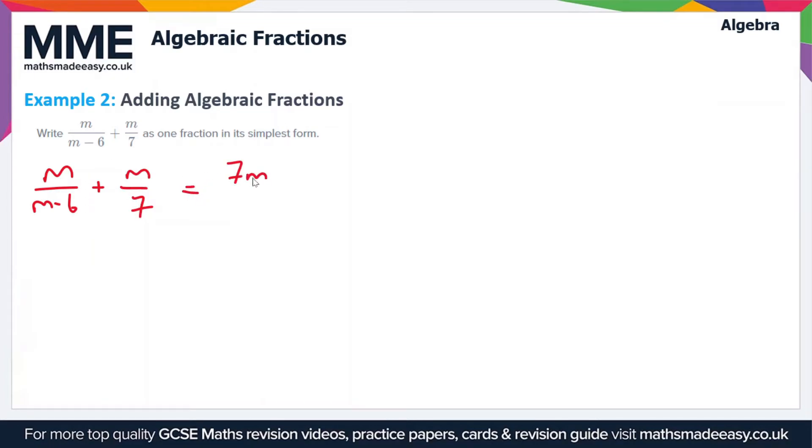This is going to give us 7m over 7(m-6) - that's our first fraction - and then we add m(m-6) over 7(m-6). We got that by multiplying the numerator and denominator by m-6.